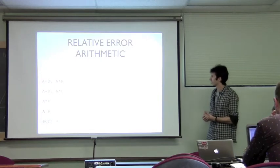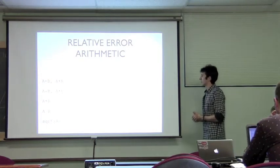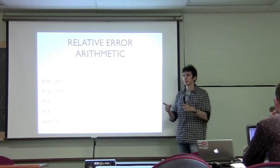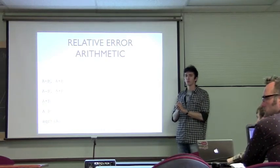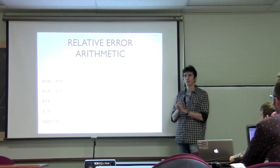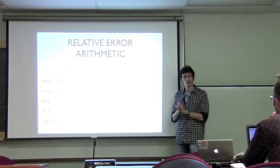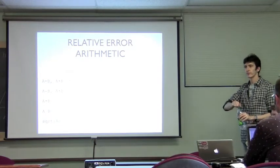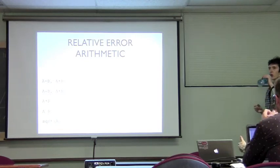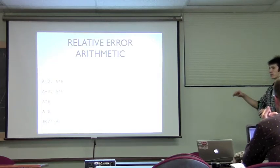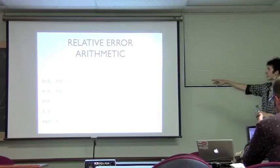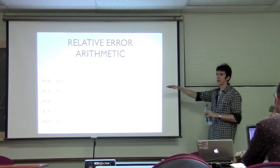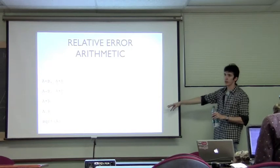What about subtraction? That's where error propagation from independent errors applies. This gives you an upper bound — it doesn't mean your actual error is as high as those values. Your actual relative error is less than those values for those operations.